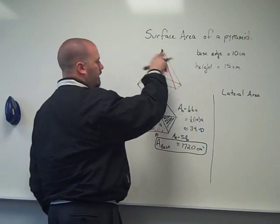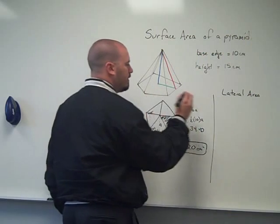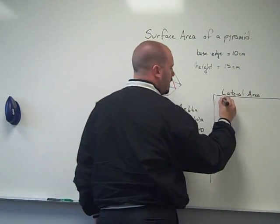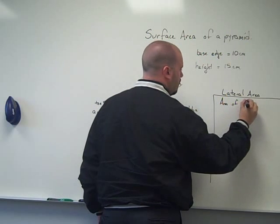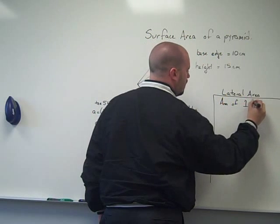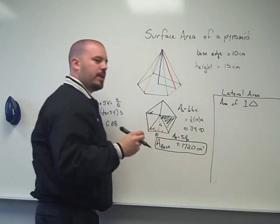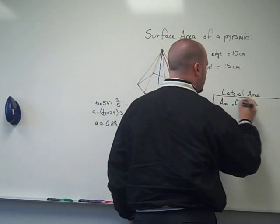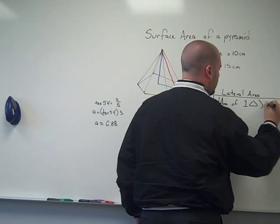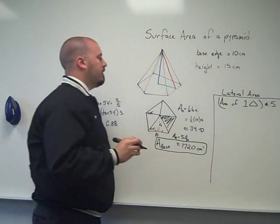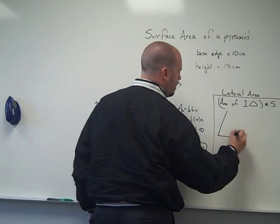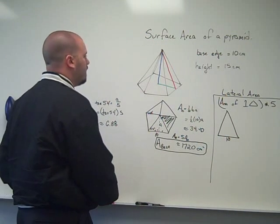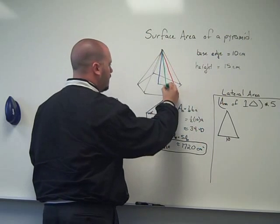All of the lateral edges are isosceles triangles. So to find my lateral area, really I'm just finding the area of one triangle, and then multiplying by however many triangles there are. Well, it's a pentagonal pyramid, so there would be 5 triangles. Now the triangle I need to find the area of, it does have a base edge of 10. Let's trace one of these in green.